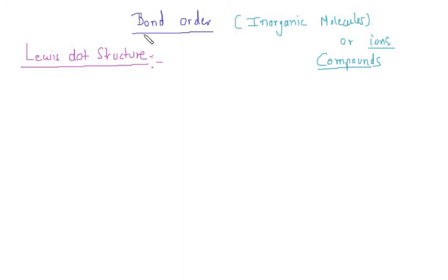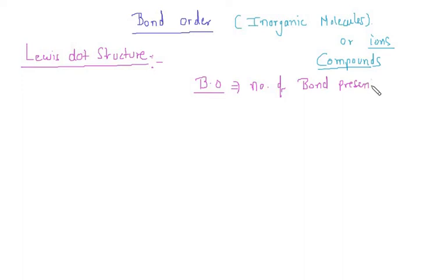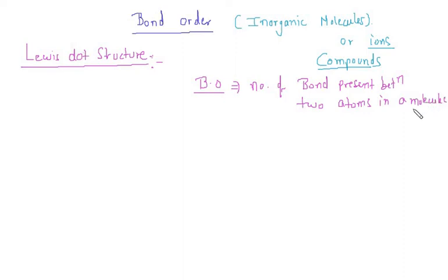So let's see the bond order. Bond order — the short form is B.O. — means the number of bonds present between two atoms in a molecule.